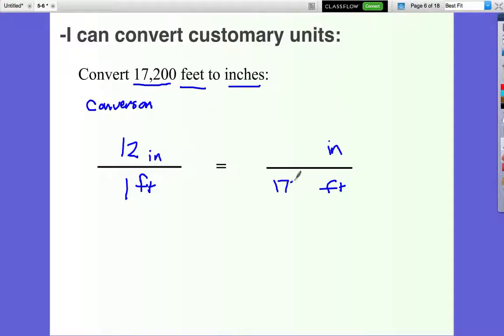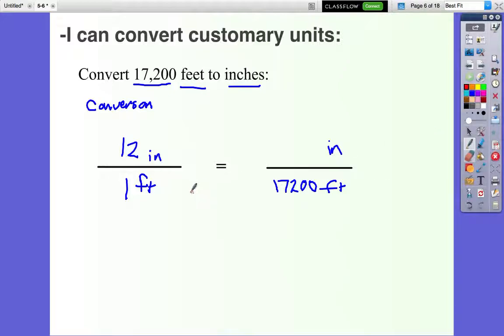Now we have to ask ourselves, how am I going to get from here to here? I can go this way like last time with ratios, or I can go this way. I'm going to go from here to here because 1 times 17,200 is 17,200.